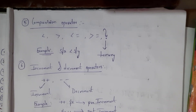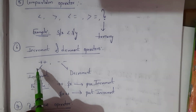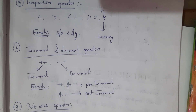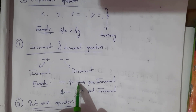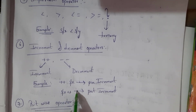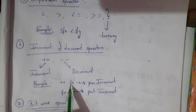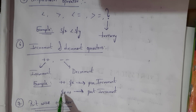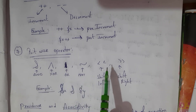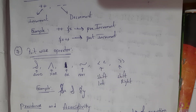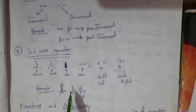The sixth one is the increment and decrement operator — '++' denotes increment and '--' denotes decrement. '++$x' is pre-increment and '$x++' is post-increment; '--$x' is pre-decrement and '$x--' is post-decrement. The last one is the bitwise operator: AND, XOR, OR, NOT, shift left, and shift right. For example, $x & $y.